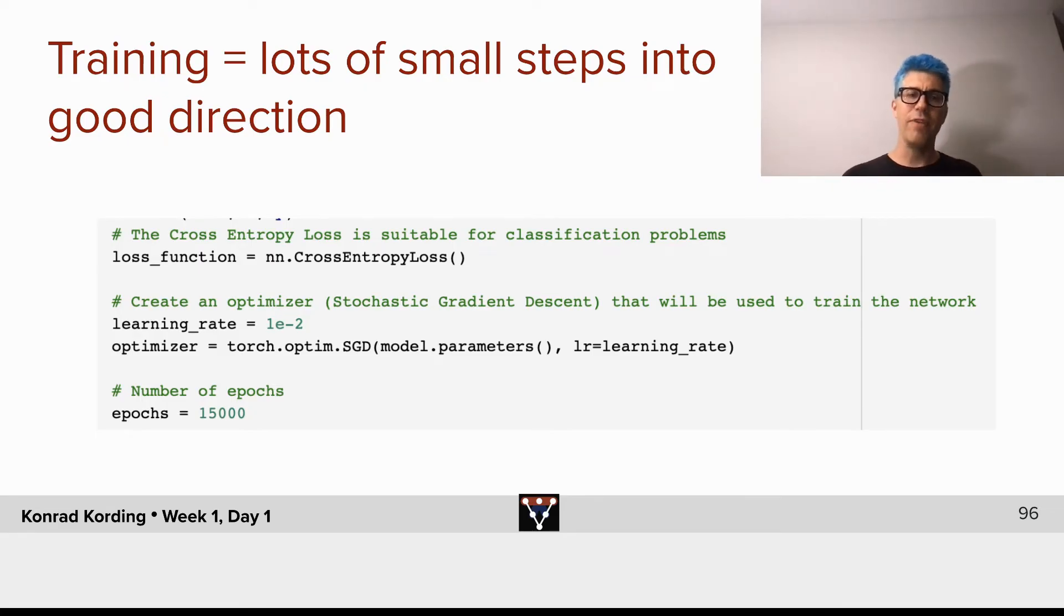So we have a loss function here, which is an N-DOS cross-entropy loss. This basically is a soft version of seeing how often we are correct here, and we will talk in great detail about what cross-entropy loss is later. Then we will set up an optimizer. We set up a learning rate here, 10 to the minus 2, and then we'll define an optimizer.